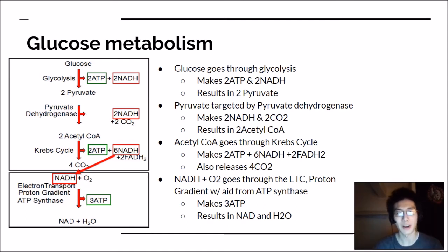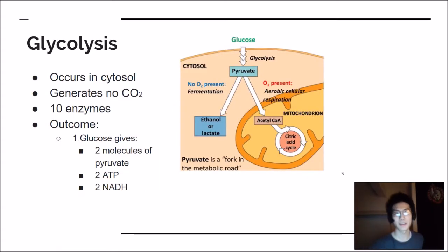My section is mostly focused on glycolysis. Let's talk about glycolysis, which has very interesting steps. Before we talk about the steps, I want to discuss glycolysis itself as a reaction. Glycolysis occurs in the cytosol, in the cytoplasm. The citric acid cycle or Krebs cycle occurs in the mitochondria, so that separates the two reactions. Glycolysis generates no CO2 because it's anaerobic. It does utilize ten enzymes, which you don't need to know. The outcome of glycolysis is very important because one glucose gives you two molecules of pyruvate, two ATP, and two NADH.